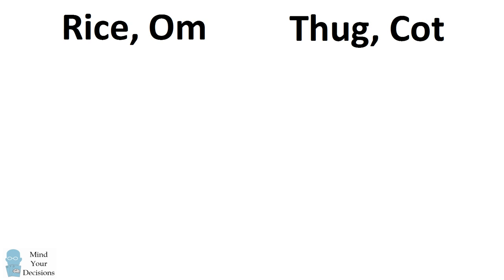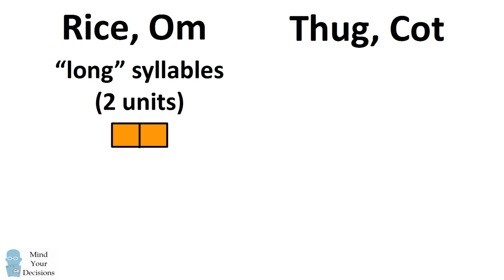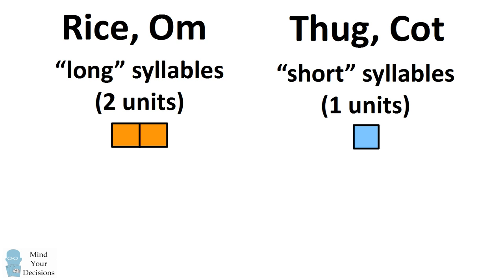In the Sanskrit analysis of poetry, rice and om can be thought of as long syllables that take two units of metrical beat. Thug and cot would be considered short syllables that take one unit of metrical beat.